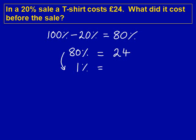We want to work out what it was before the sale, so we want to work out 100%. In order to do this, we must start by working out 1%. We had 80%, so to work out what 1% is we divide by 80. We do this to both sides of the equation, as shown in this slide. 24 divided by 80 gives us 0.3, so 1% is 0.3.